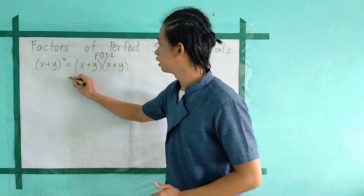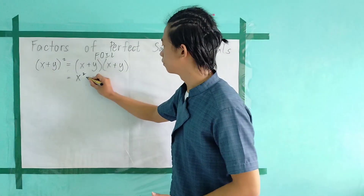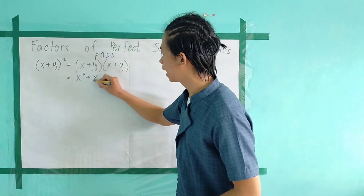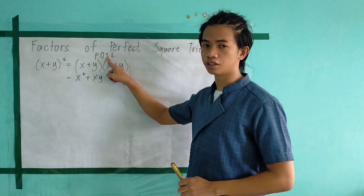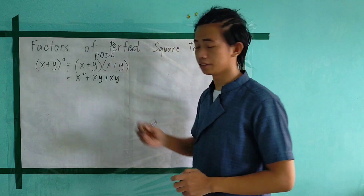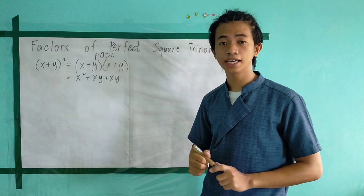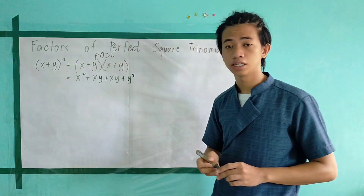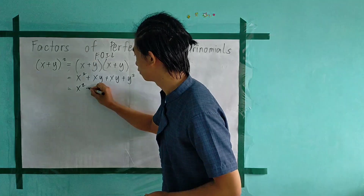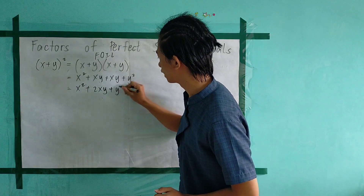FOIL method: F stands for the first term — x multiplied by x, we have x squared. Plus the outer term, x multiplied by y, we have xy. Next, inner term: y multiplied by x, we have xy. Then L stands for the last term, y multiplied by y, we have y squared. Combining similar terms, we have x squared plus xy plus xy, giving us x squared plus 2xy plus y squared.